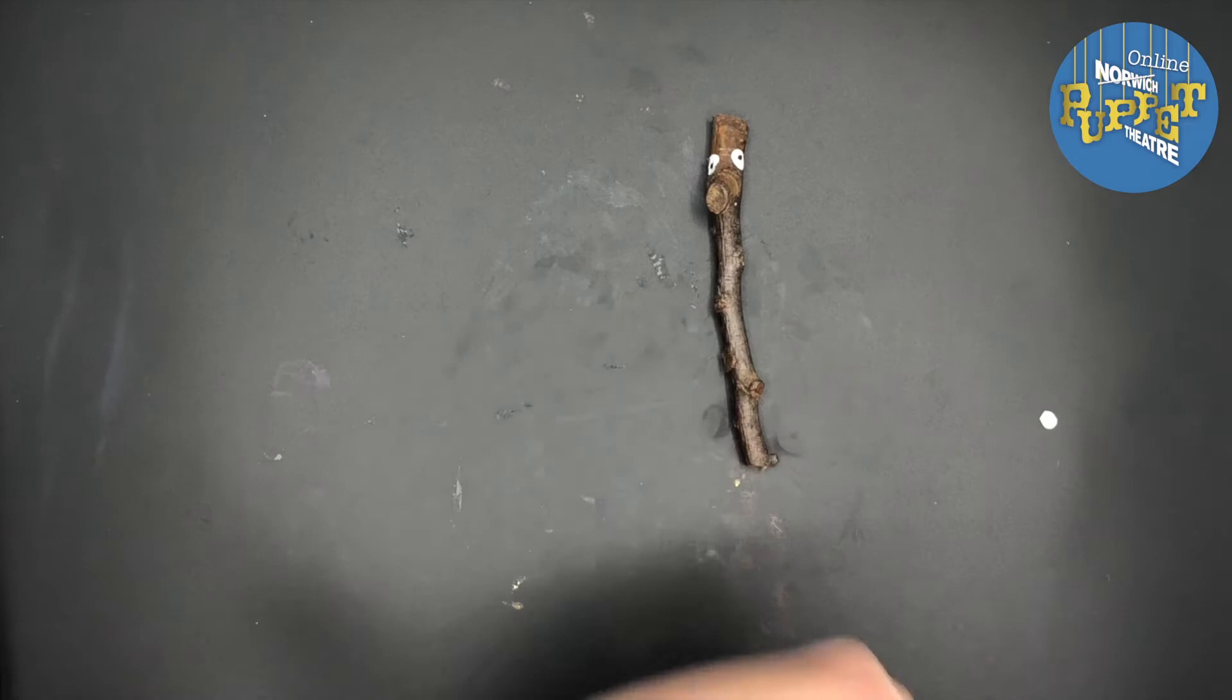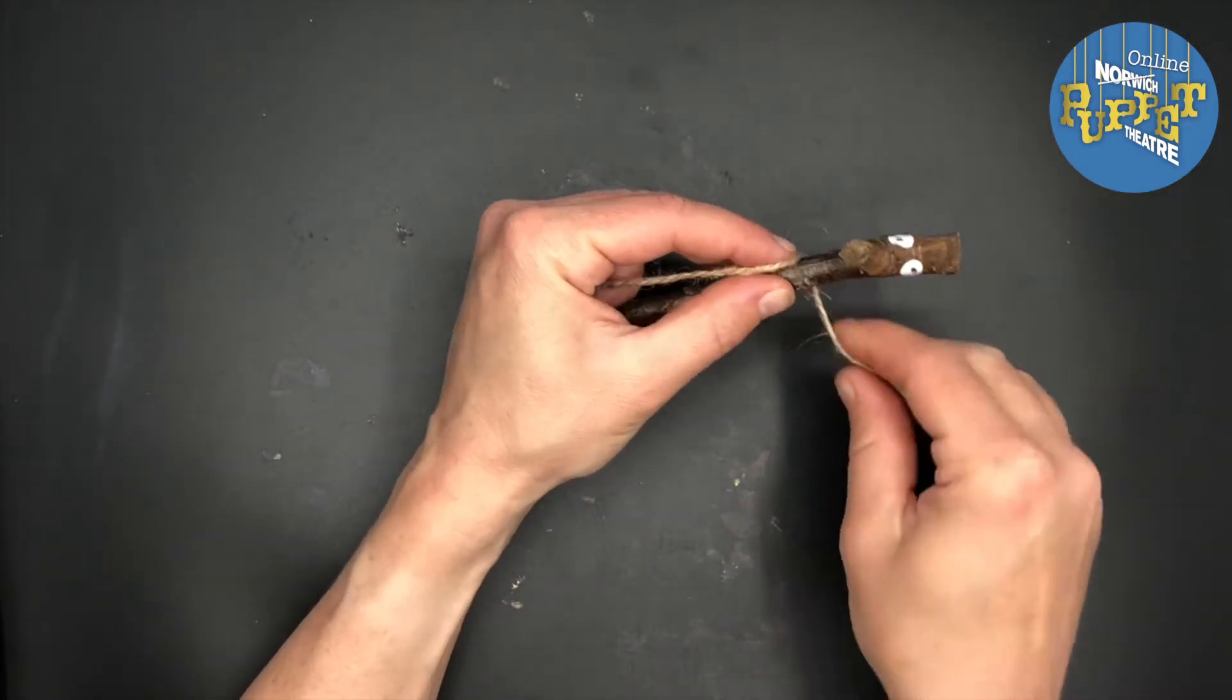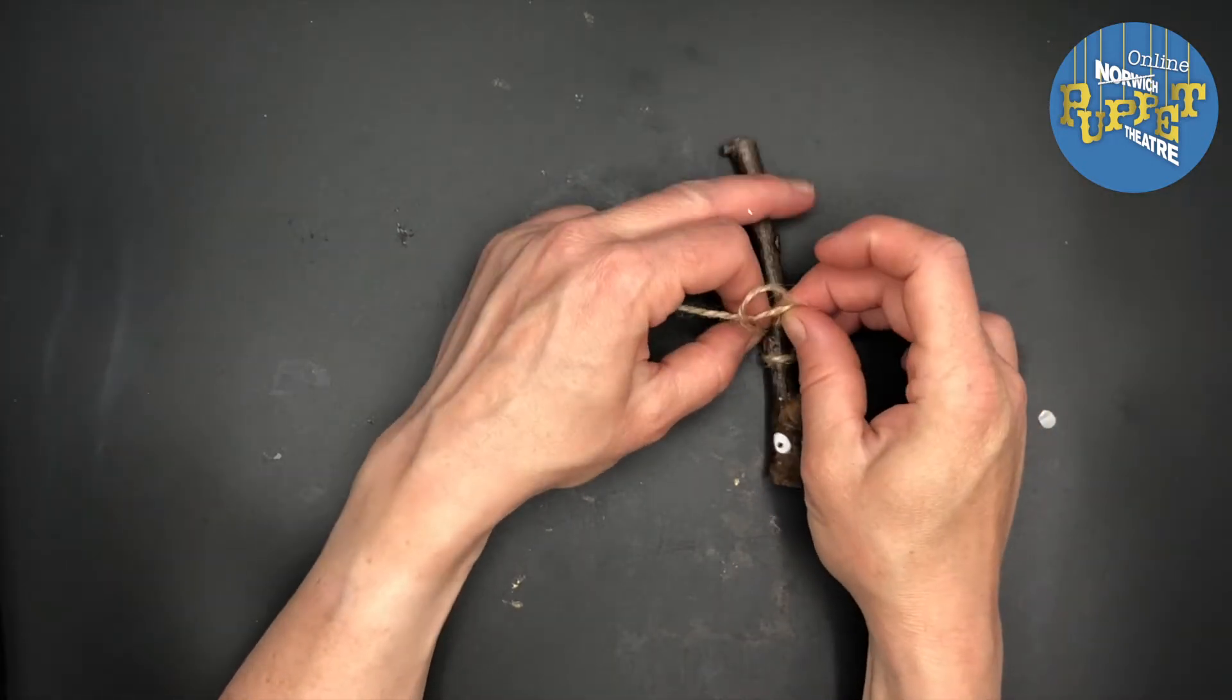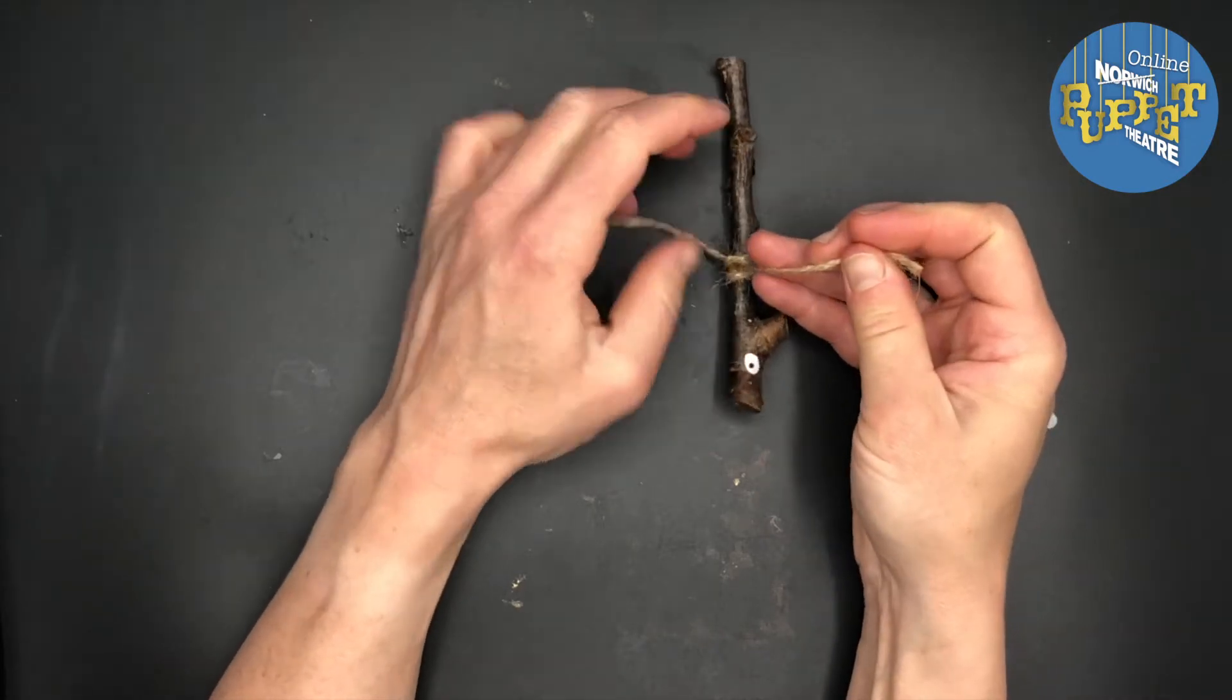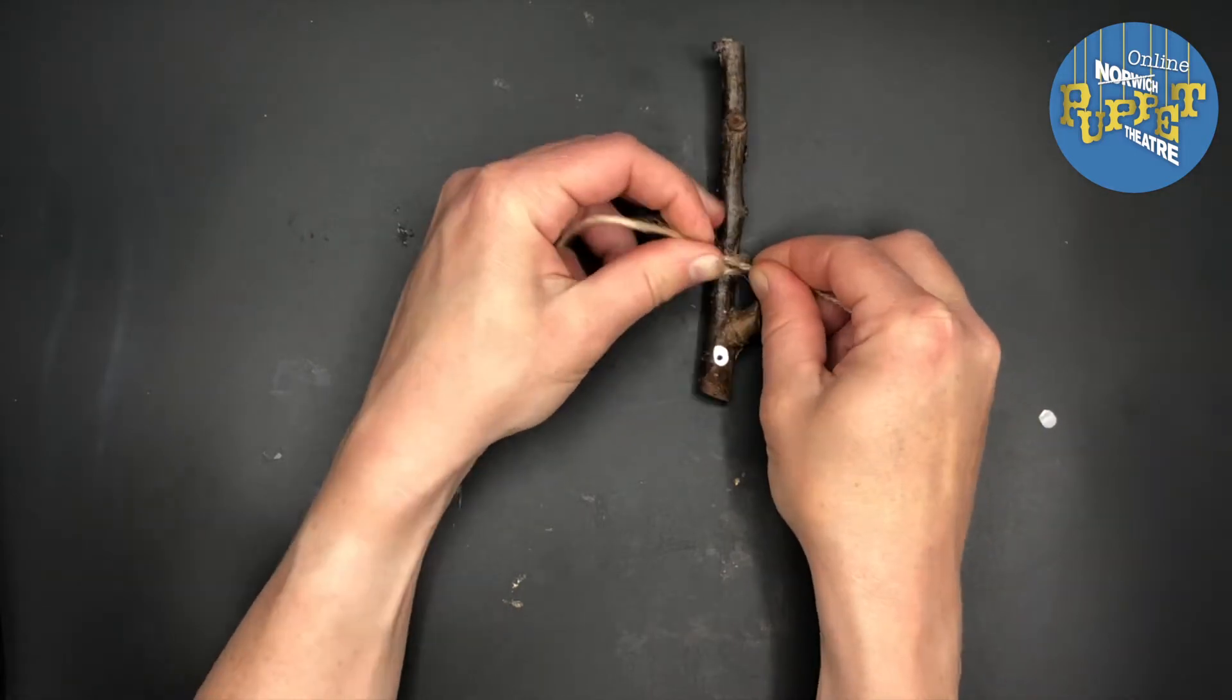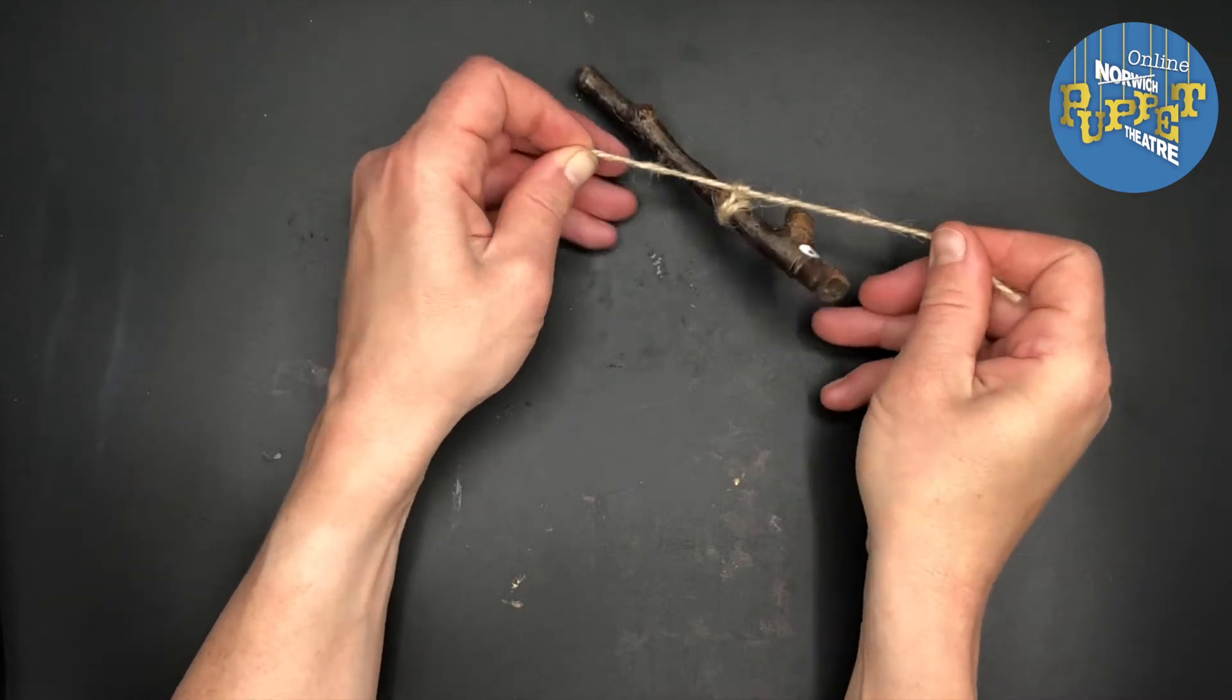Then take a piece of rope or string or twine and cut a length of that, and then you wrap it around your stick where you want your arms to be and tie a kind of loop knot. And then I'm going to do a double knot there just to make sure that it doesn't undo.